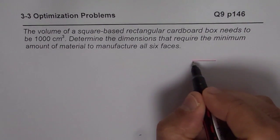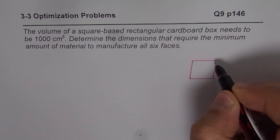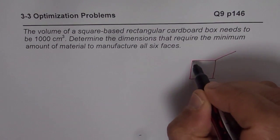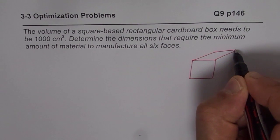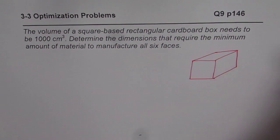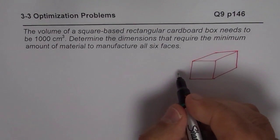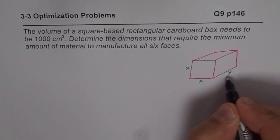Let us sketch the box first and define the variables. It is square-based, so all these sides are equal. We will call them as x, and that is the depth of the box. So the square base is x times x and y is the depth of the box.